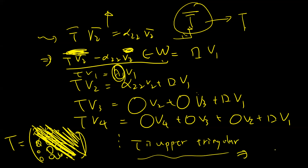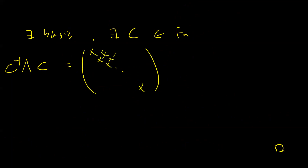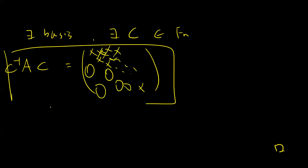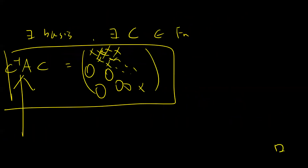So the induction works: we used the induction assumption on T-bar, then recovered T, and showed T is still upper triangular. The proof is done. We have shown that for any matrix, given a suitable basis transformation C, C-inverse A C is upper triangular with the eigenvalues on the diagonal.